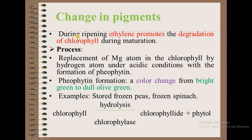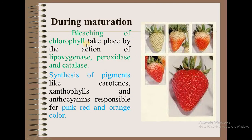Next is change in pigments. During ripening, ethylene promotes degradation of chlorophyll. The magnesium atom present in chlorophyll is replaced with a hydrogen atom under acidic conditions, producing pheophytin, which causes the color to change from bright green to dull olive green — seen for example in frozen peas and frozen spinach. Chlorophyll is also converted into chlorophyllide plus phytol by the action of chlorophyllase. During maturation, bleaching of chlorophyll takes place by the action of lipoxygenase, peroxidase, and catalase. In addition, synthesis of pigments like carotene, xanthophyll, and anthocyanins are responsible for the pink, red, and orange color of the fruit.